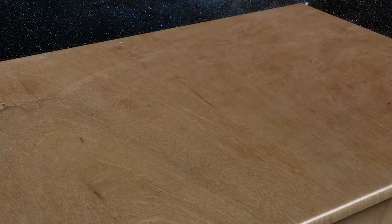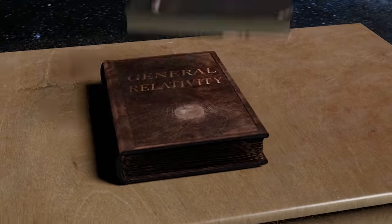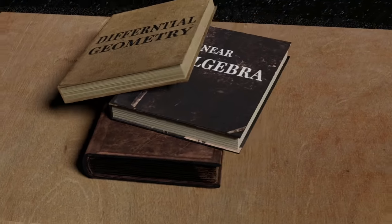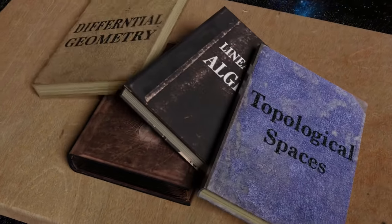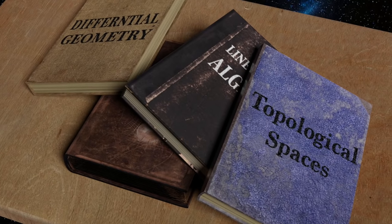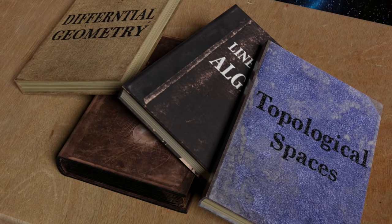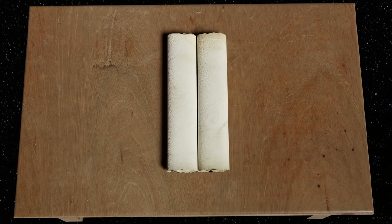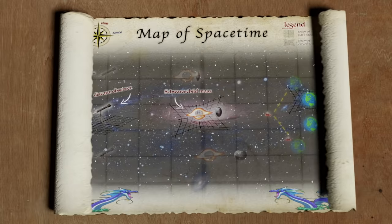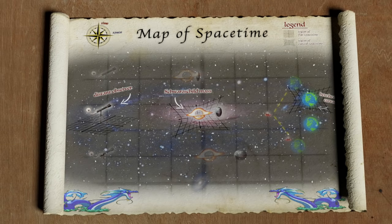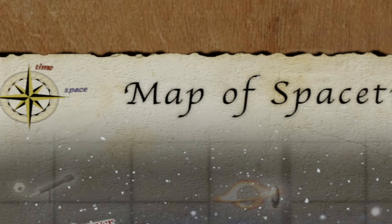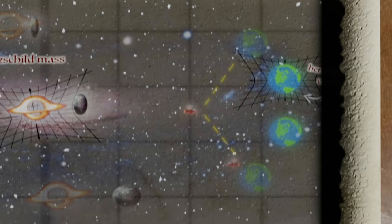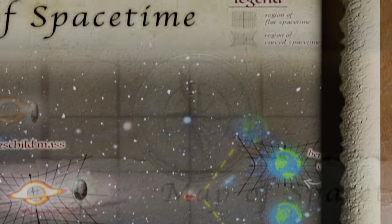General relativity is so buried under mind-bending ideas and esoteric mathematics that the basic secret of the theory might easily escape your notice. All you're doing in general relativity is making a map. A map of space and time. That's it. You are literally a space-time cartographer.